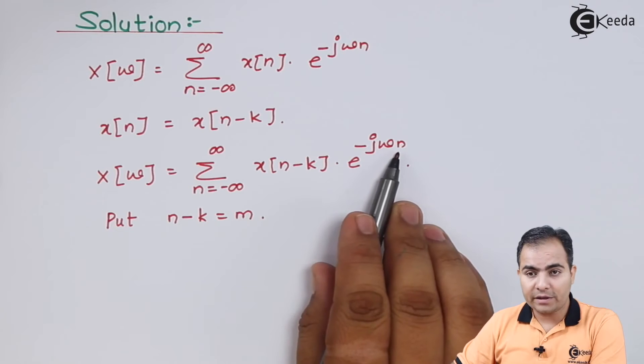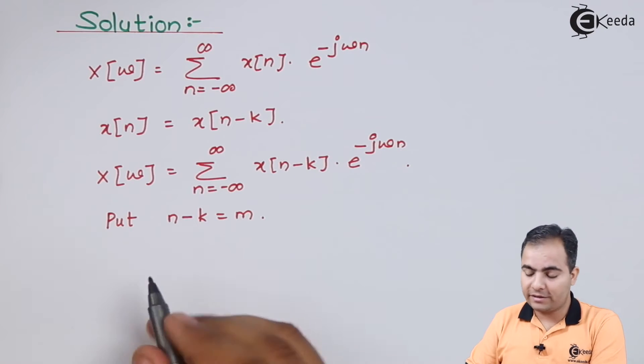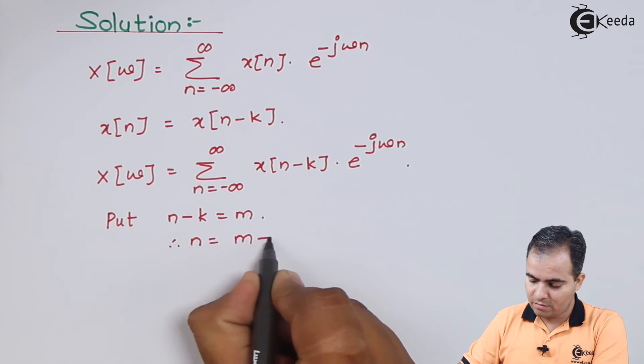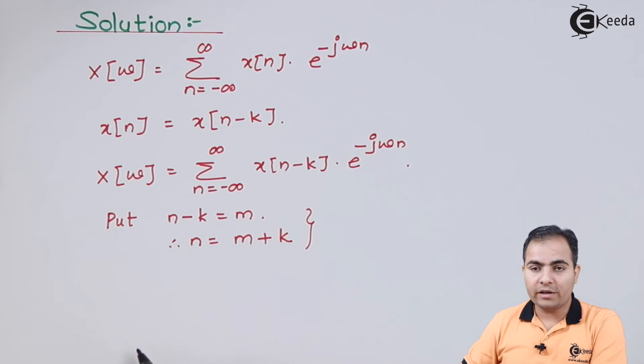We have to calculate the value for this n. So I am going to shift this minus k to the right hand side. Now I will put all these values.